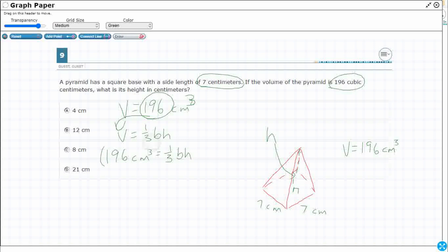Well, if I multiply both sides by three, watch what that's going to do. That's going to get rid of this one-third because three times one-third is three over three. So that's going to cancel itself out because three times one-third equals three over three, which equals one.